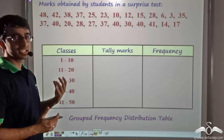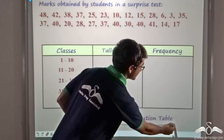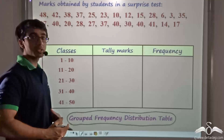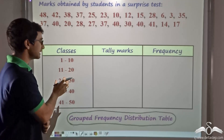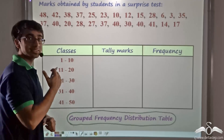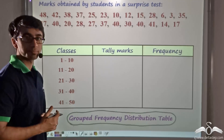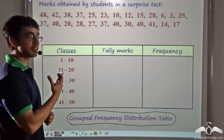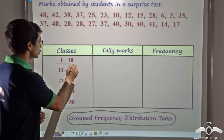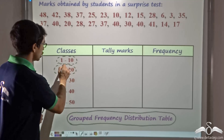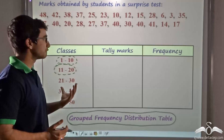Now I have to represent this particular data with the help of a grouped frequency distribution table. If you remember, earlier we had a simple frequency distribution table where individual variates were given their frequency. Now in this case, to make matters easier, we have a grouped frequency distribution table. So we do not have to list down every individual variate — instead, I just list the groups or classes that I have considered.